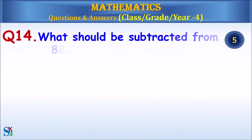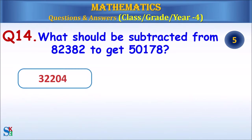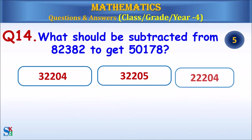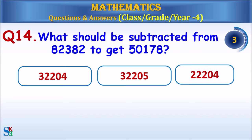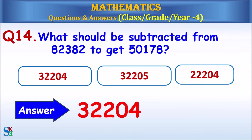Question 14: What should be subtracted from 82,382 to get 50,178? The answer is 32,204.